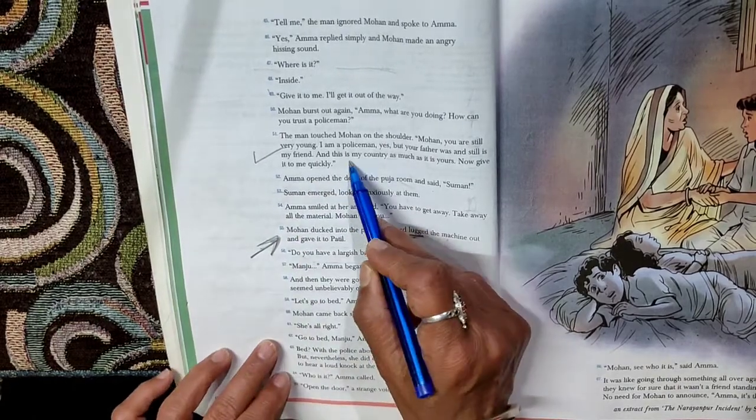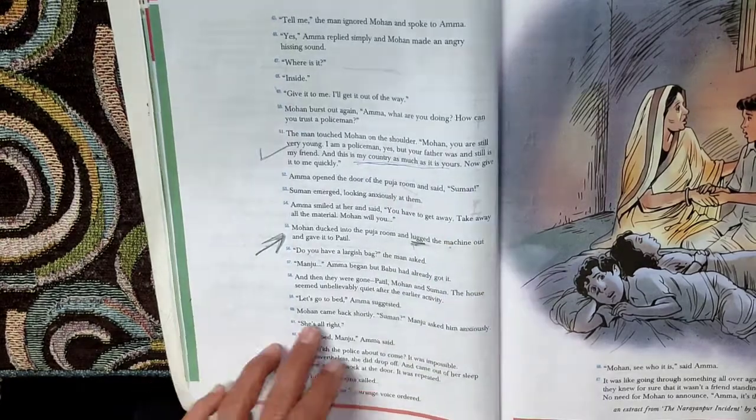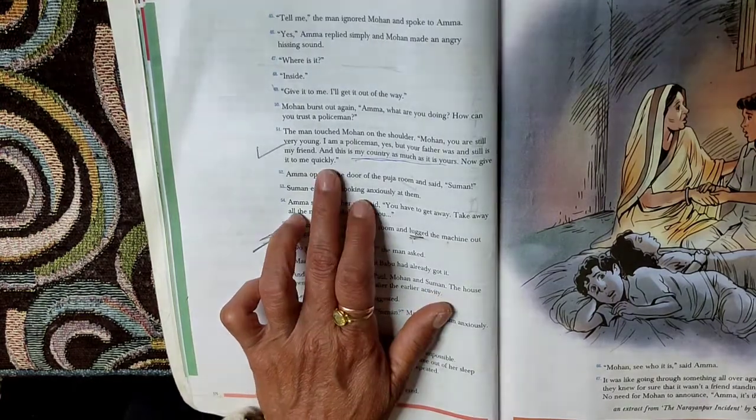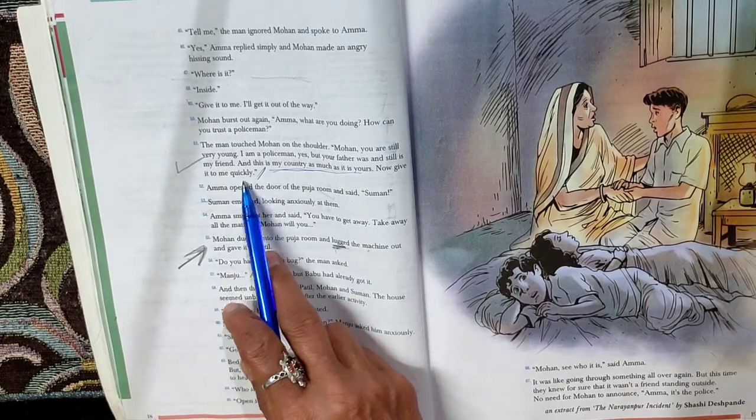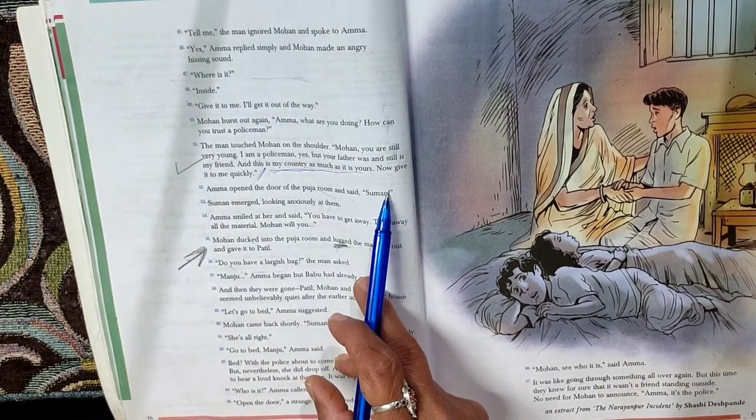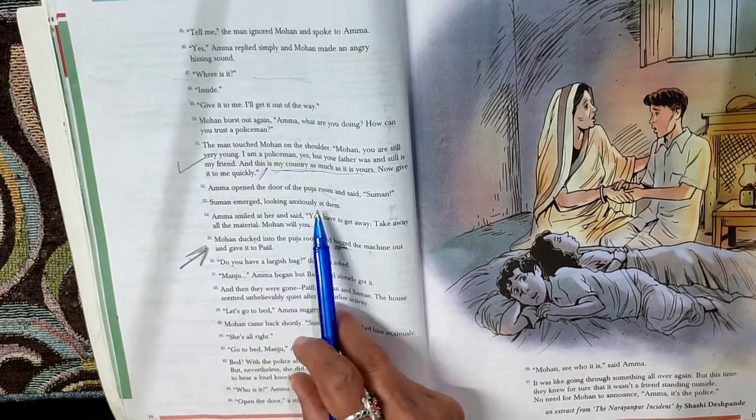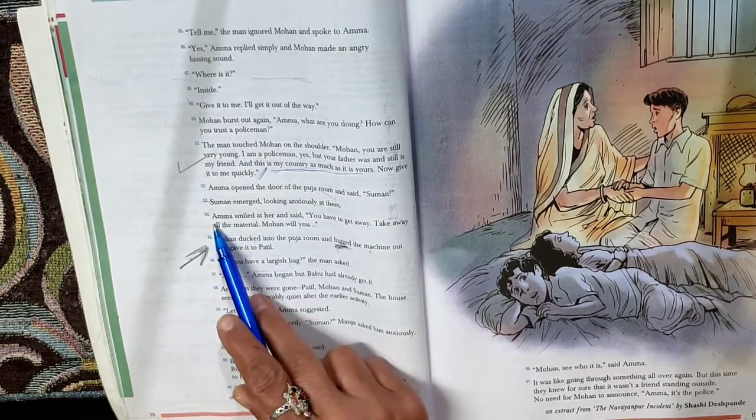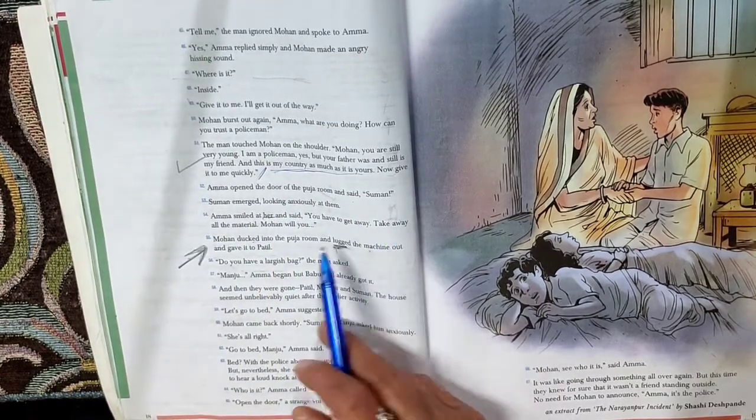Now this shows that this man is very patriotic. He has the same patriotic feeling. Sub-inspector Patel wants the cyclostyling machine quickly. Amma opened the door of the pooja room and said, Suman, you remember is still inside the pooja room. Suman emerged looking anxiously at them. Amma smiled at her and said, Suman is a girl, you have to get away. Take away all the material. Mohan will you. She is giving some responsibility, some task to Mohan. But it is incomplete, maybe help.